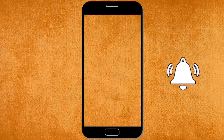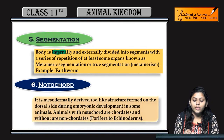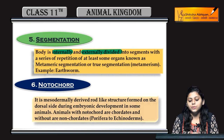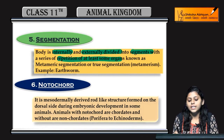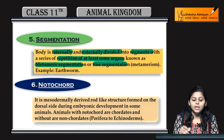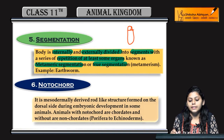Next topic is segmentation. The body is internally and externally divided into segments, with a series of repetition of at least some organs. This is metameric segmentation, or true segmentation. If an animal's body is segmented both externally and internally, then it is considered true segmentation.